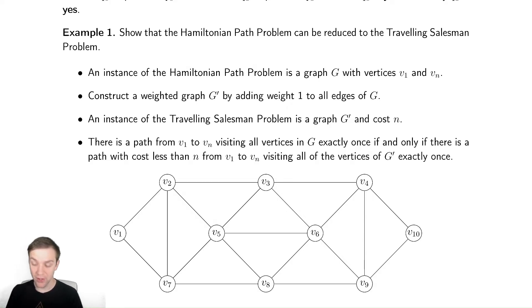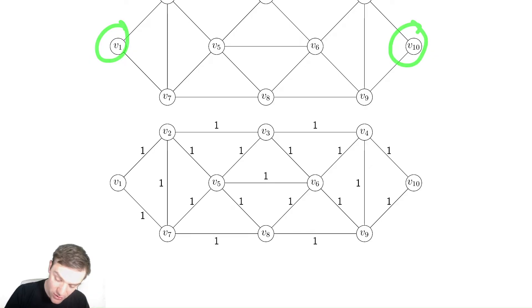If we can find a path from V1 to VN in this new graph with cost less than N, so less than 10 in this case, then we will have found the Hamiltonian path because the cost of each edge is one. So if I can do something to find the path inside of this graph and I can get the cost to be nine, which is less than 10, I will have found nine edges, which will be the number of edges in the Hamiltonian path from V1 to V10.